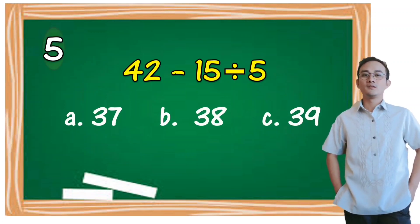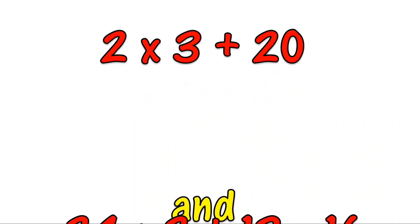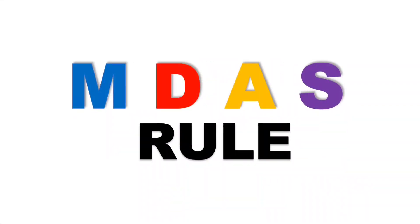And for the last number, 42 minus 15 divided by 5. A) 37, B) 38, C) 39. The correct answer is letter C, 39. The MDAS rule — MDAS refers to the basic operations.